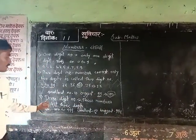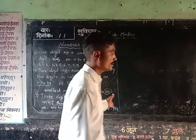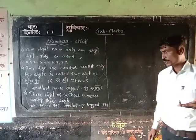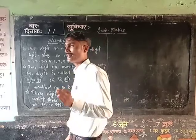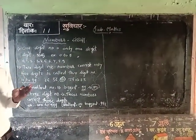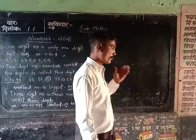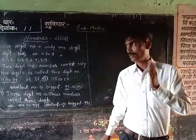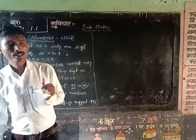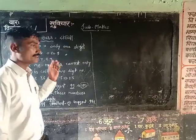After that, we studied 3-digit numbers. What does it mean by a 3-digit number? A 3-digit number consists of only 3 digits. It starts from 100 and goes up to 999. So in 3-digit numbers, the smallest number is 100 and the biggest number is 999.